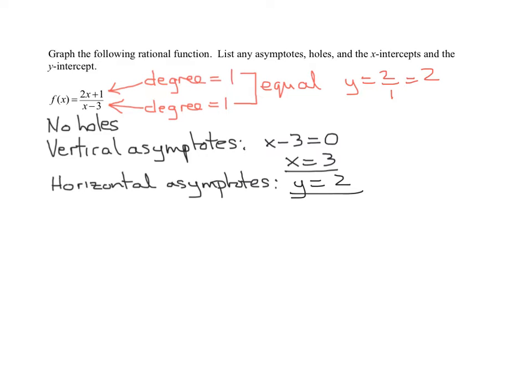Now we have to find the x and the y intercepts. So how do you find the x-intercepts of any function? You set y equal to 0. Remember, in this case, it's f of x equal to 0. So 0 equals 2x plus 1 over x minus 3.